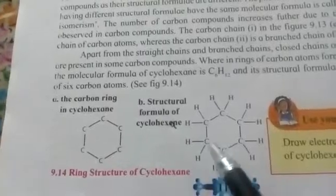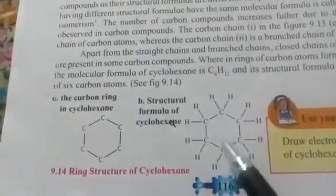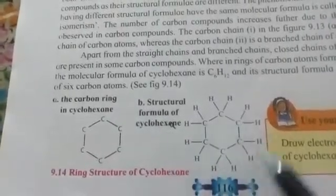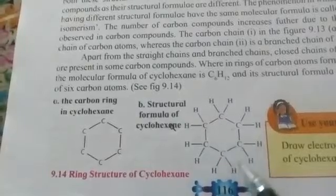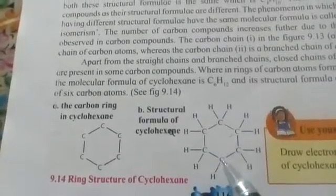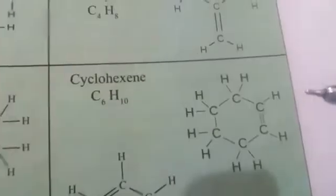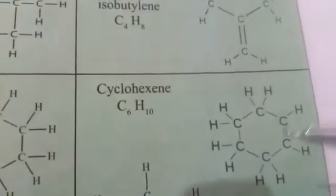Cyclohexene has molecular formula C6H10, while cyclohexane has molecular formula C6H12. In the structural formula of cyclohexane there is no double bond present, but in cyclohexene there is a double bond. Don't get confused — please make a correction in your book.